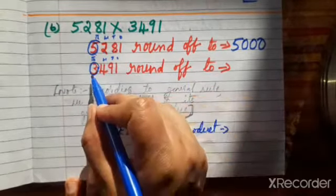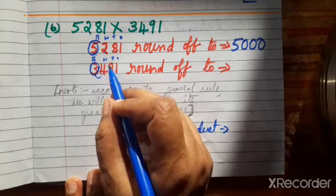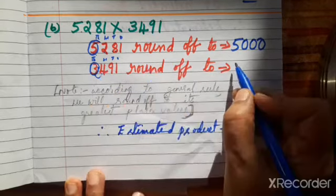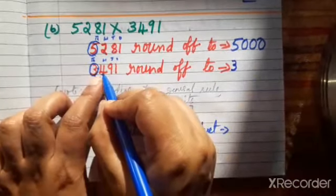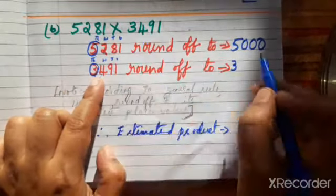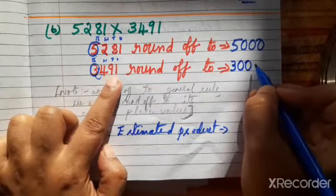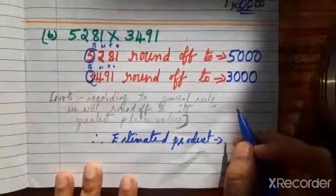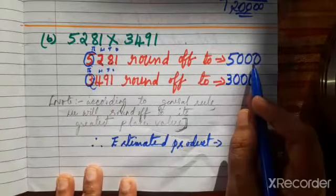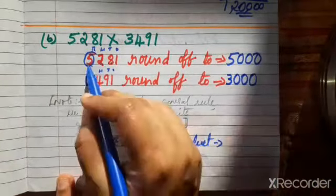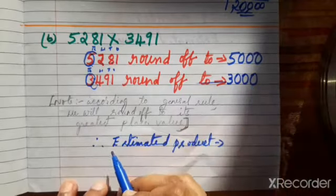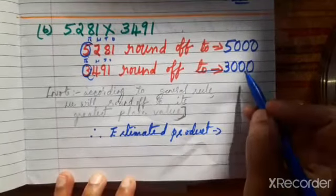Now round off 3491. Ones, tens, hundreds, thousands — 3 is in the thousands place, the highest. Circle 3. Knock the door: next digit is 4. Ask: do you have 5 rupees or more? Four can't help — only 5 through 9 can help. So 3 remains the same. The remaining digits 4, 9, 1 become zeros. So 3491 rounds off to 3000.